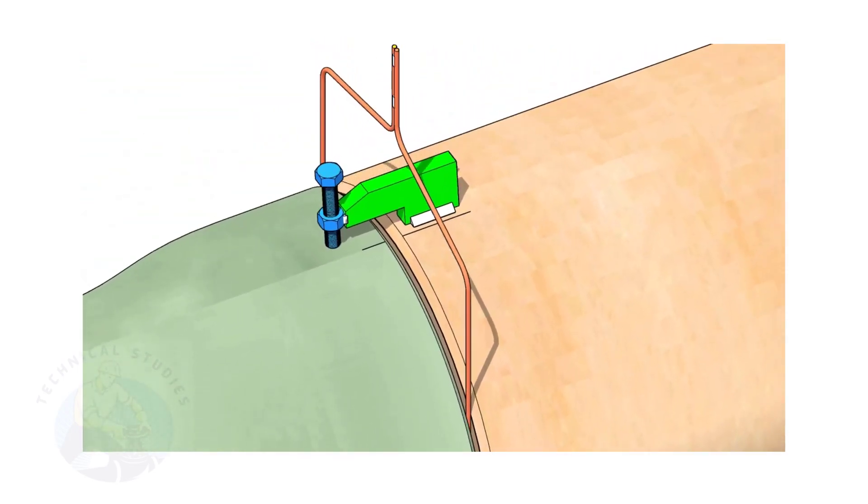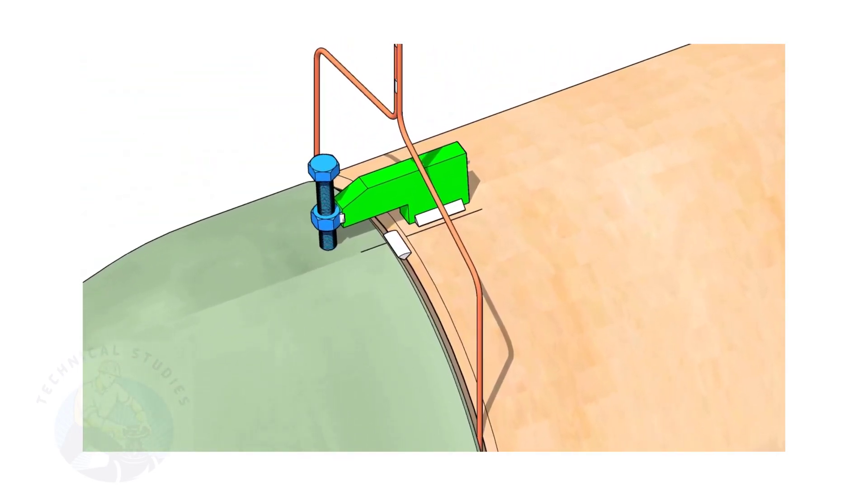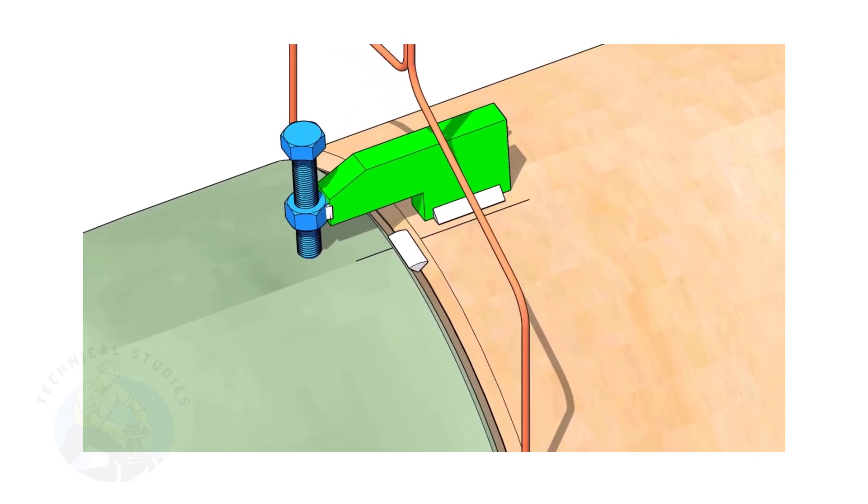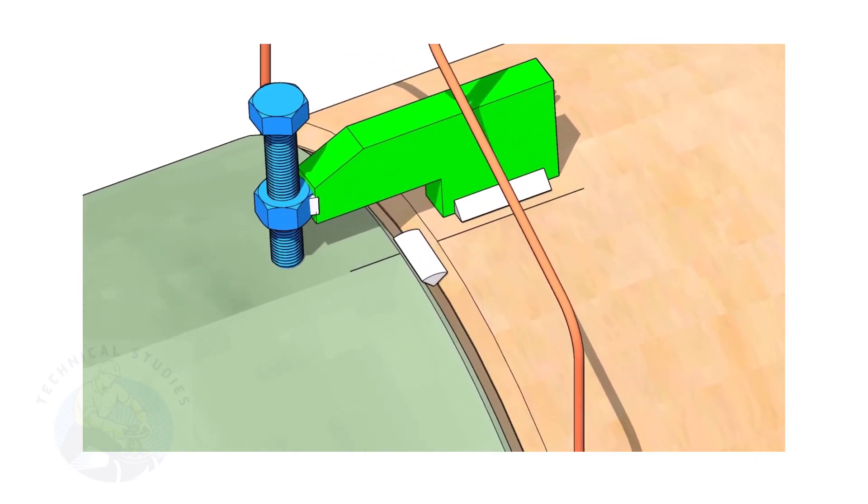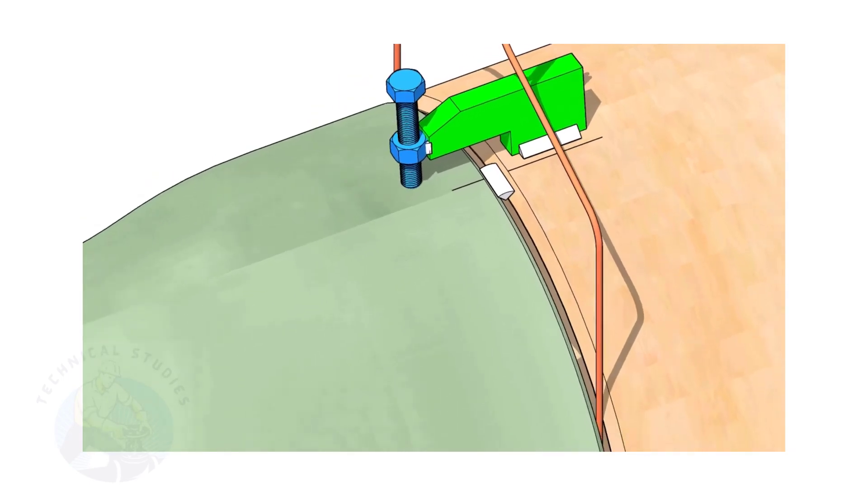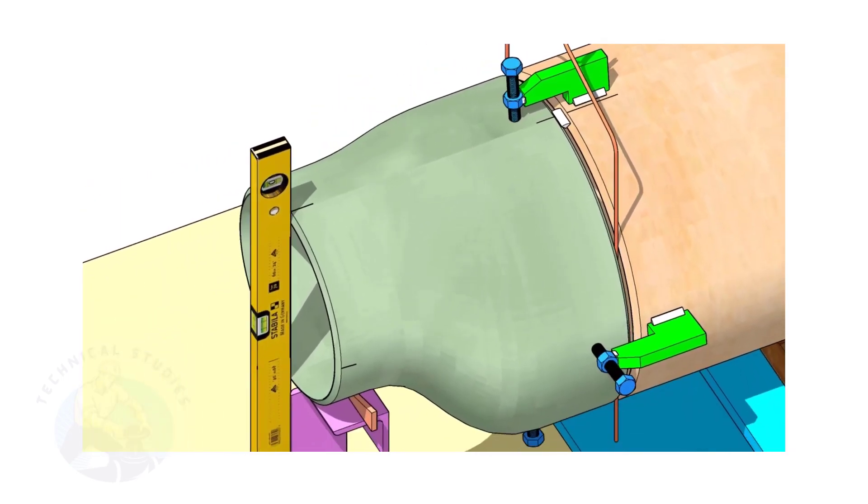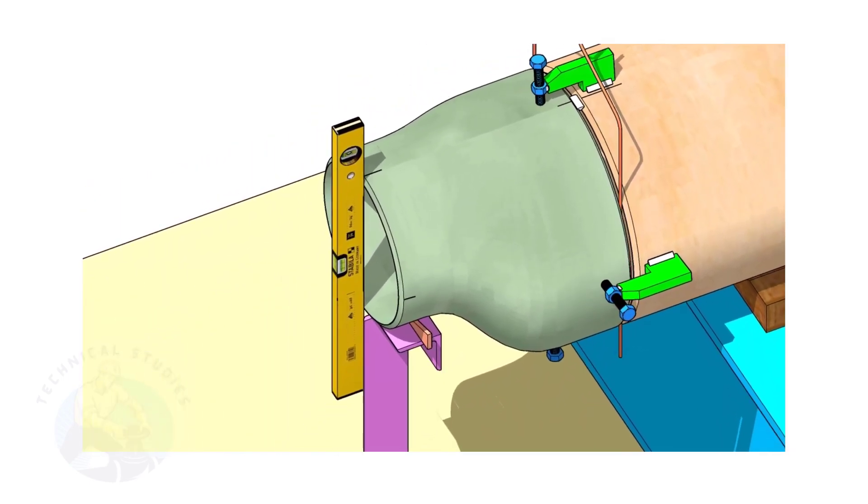Now, tack weld on the top side of the joint. Correct the levelness of the outer face of the reducer.